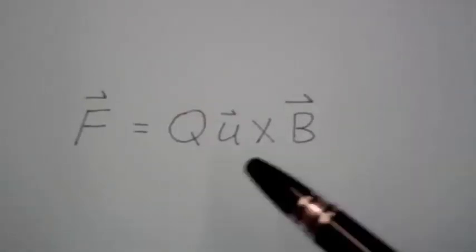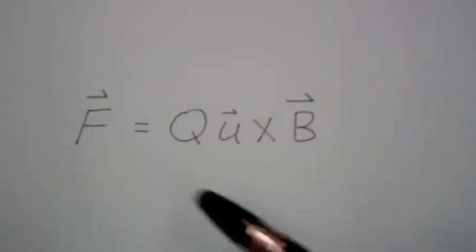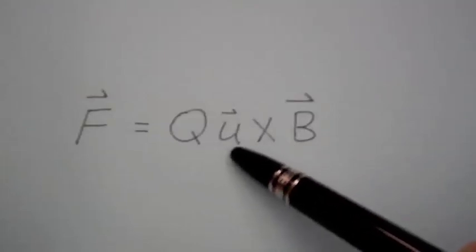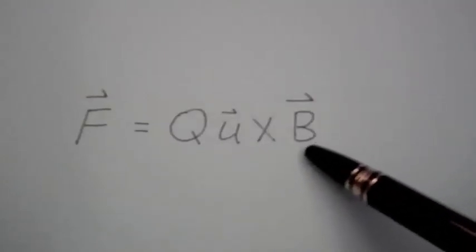So if the particle is not moving relative to the magnetic flux density, there is no force, and the force is going to be at a right angle to the direction of the velocity and the direction of the magnetic flux density.